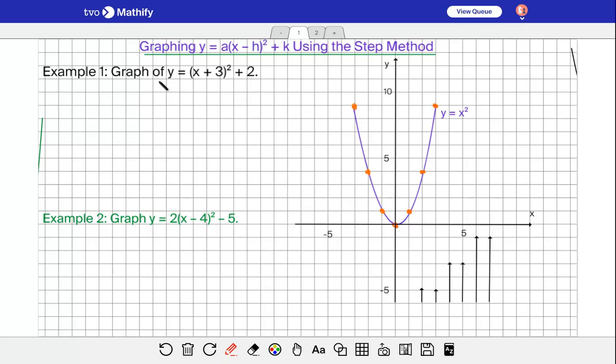The first example here we're graphing y equals (x + 3)² + 2. The first thing I want to do is write where the vertex is. The vertex is h comma k, so notice this is x plus 3, not x minus a number, so the vertex would be at (-3, 2). I'll plot where my vertex is, so negative 3 plus 2 would be right here.